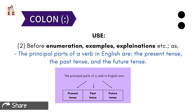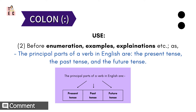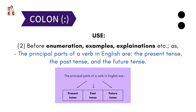Then, colon is used before enumerations, examples, and explanations. Like: 'The principal parts of a verb in English are: the present tense, the past tense, and the future tense.' Remember that colon is often used before something that is divided. As in this diagram, the principal parts of a verb are divided into present, past, and future — and before this division, these three are separated by colon. Recollect this diagram before you use a colon.